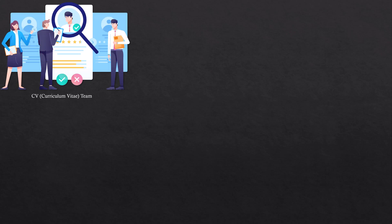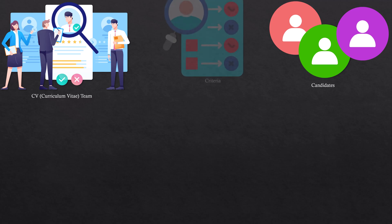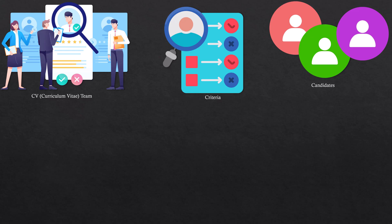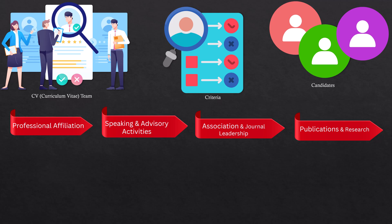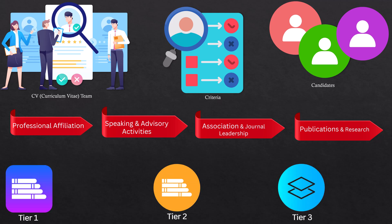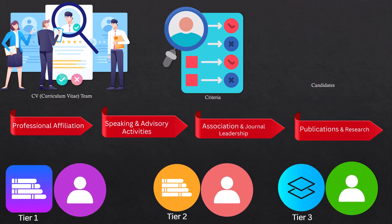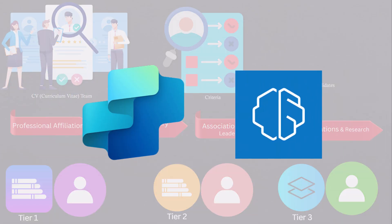Let me go through a scenario first. What we have here is a team whose job is to go ahead and see all the CVs submitted by candidates and tier them based on certain criteria. The four buckets of criteria are: professional affiliation, speaking and advisory activities, association and journal leadership, and publications and research. Based on these criteria, they put candidates into certain tier levels. This is all done manually right now, several times a week. What I'm going to show you is how we can automate all of this with AI Builder in the back end and Copilot Studio Agent in the front end.